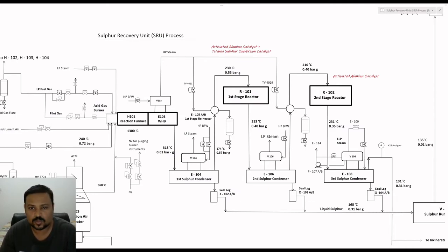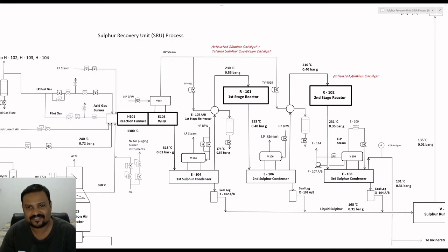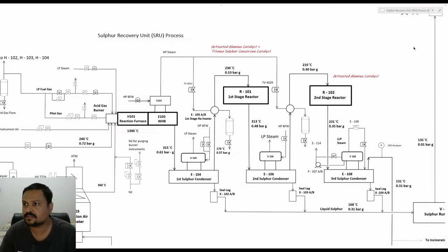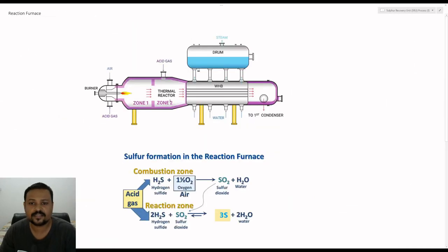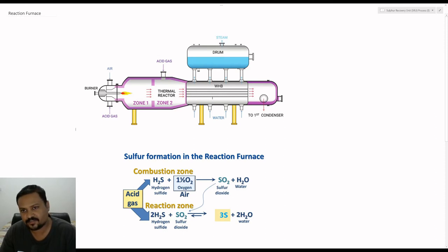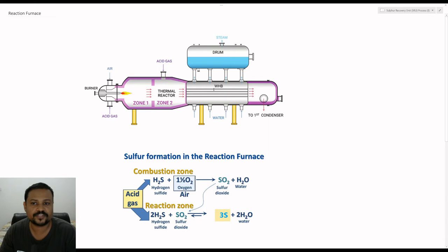After combustion, the reaction products are cooled in the waste heat boiler. The boiler is a fixed tube sheet heat exchanger with an integral steam drum, which produces high-pressure steam. The tube sheet of the boiler will be protected from the high-temperature gas by ceramic ferrules and refractory. The hot combustion gases coming out of the reaction furnace will pass through the tube side of the waste heat boiler, and the shell side will have boiler feed water which will come in contact with the hot tubes and produce high-pressure steam from the steam drum.